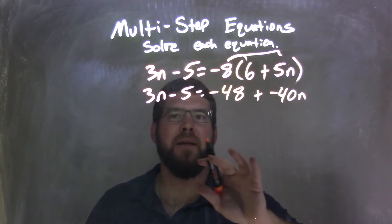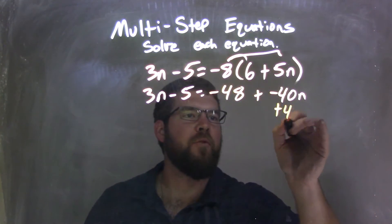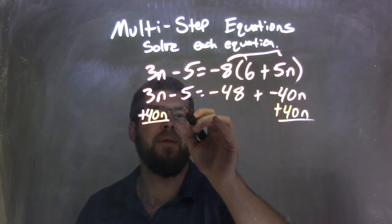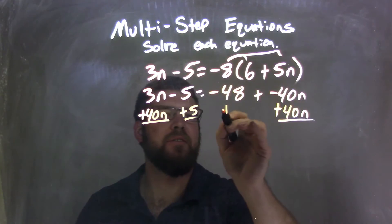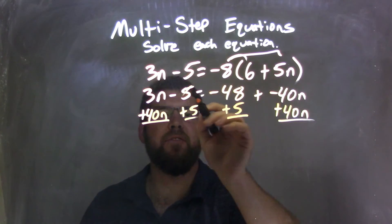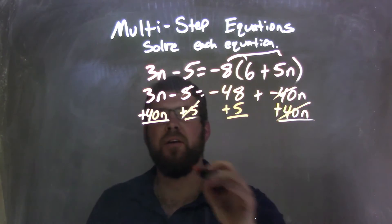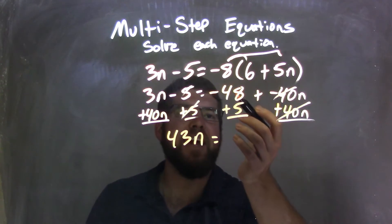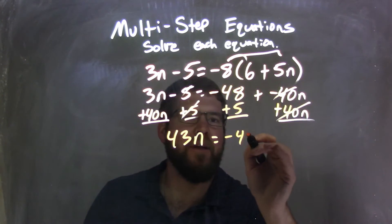So I now have to combine my like terms. I'm going to bring the 40n over to the left, so plus 40n, and I'm going to add a 5 to the right. It cancels out these 5s and the 40n's here. So I have 3n plus 40n is 43n equals negative 48 plus 5, which is negative 43.